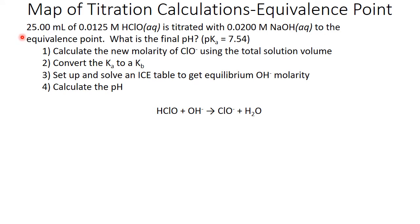25 milliliters of 0.0125 molar HClO, hypochlorous acid, is titrated with 0.0200 molar NaOH to the equivalence point. What is the final pH? The pKa of HClO is 7.54.